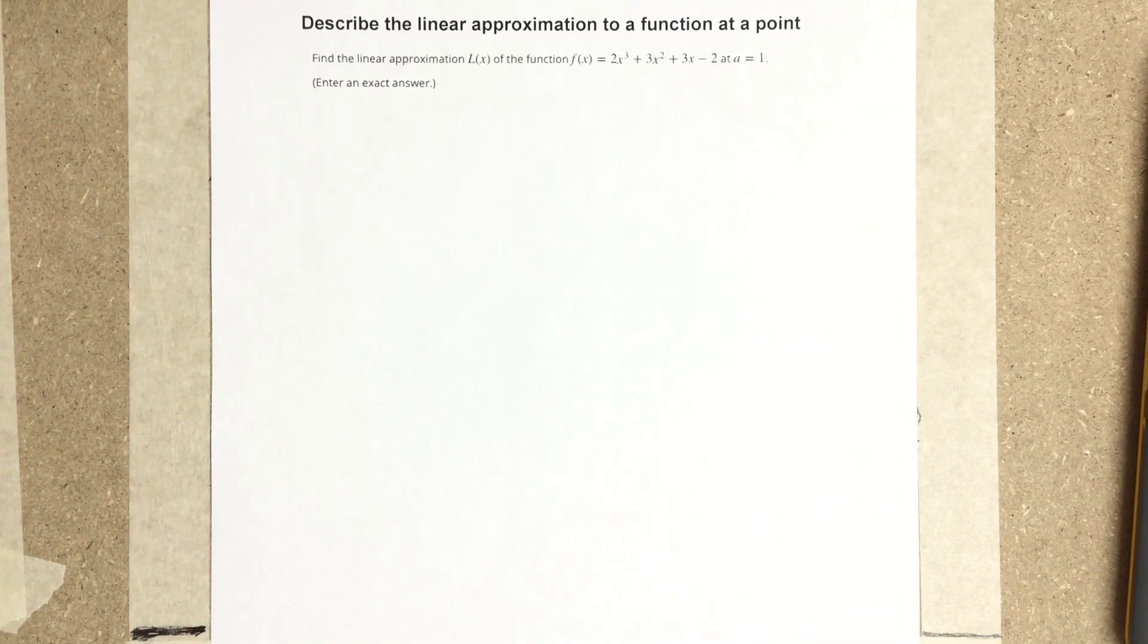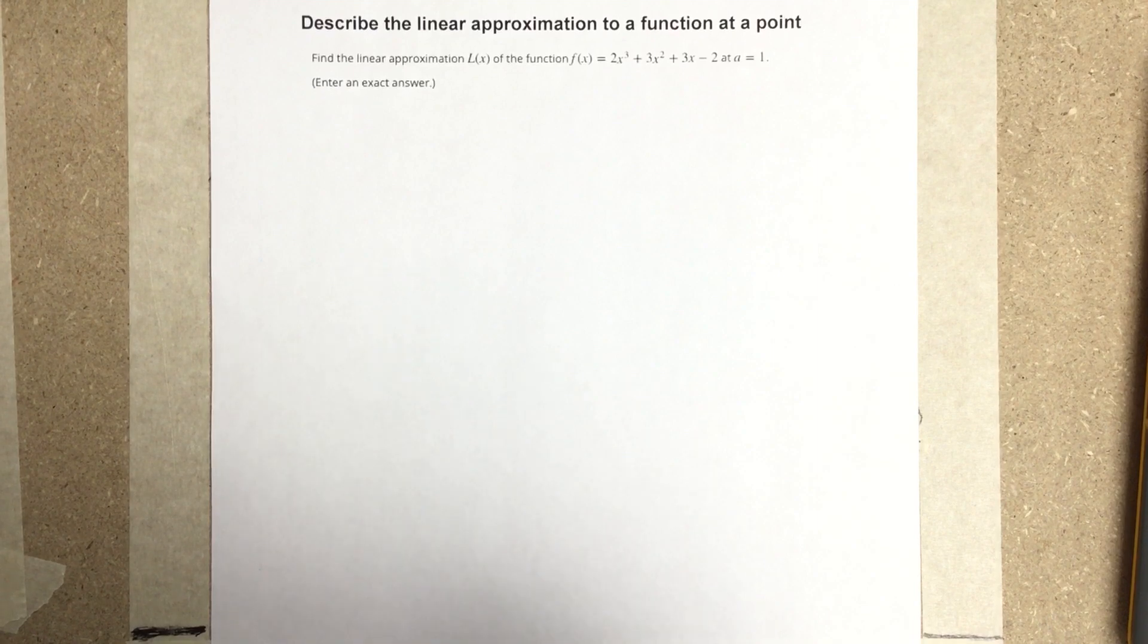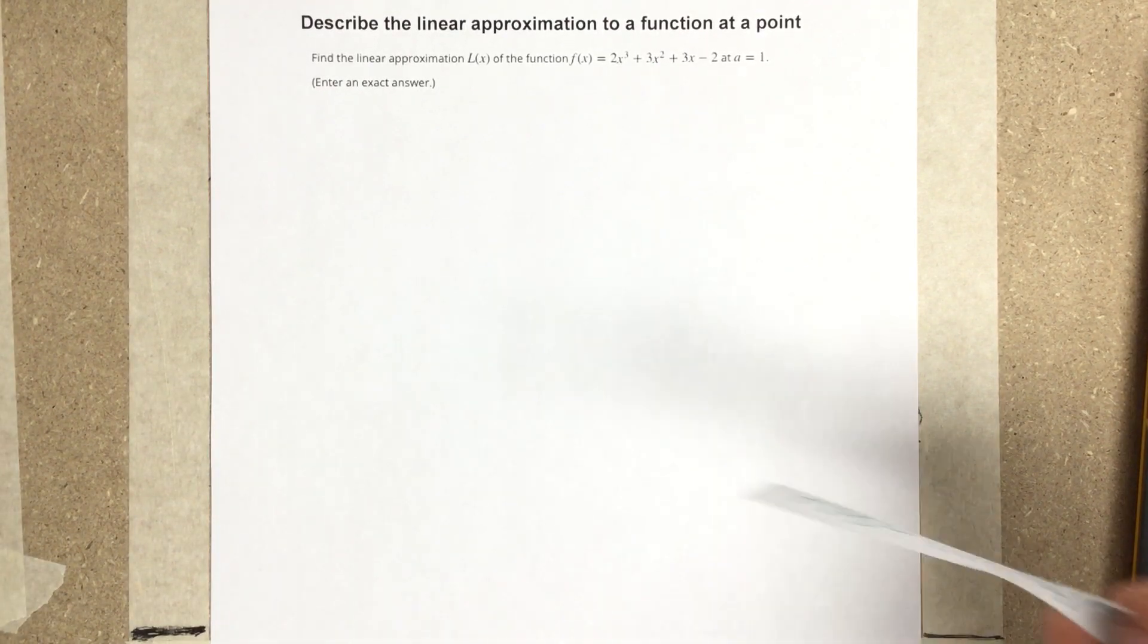In this video we're going to describe the linear approximation to a function at a point. Find the linear approximation L(x) of the function f(x) = 2x³ + 3x² + 3x - 2 at a = 1.